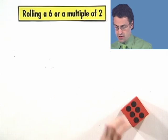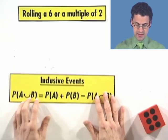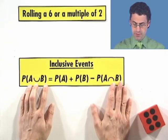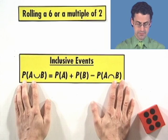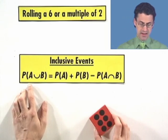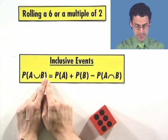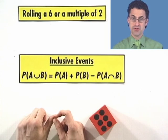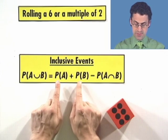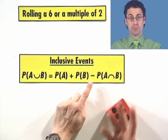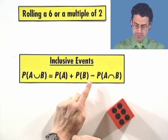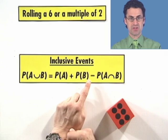These are called inclusive events. And the way we find the probability is to say that the probability of something or something else happened when they're not mutually exclusive. We take the probability of each and add them together, and then we have to subtract off the part they had in common, which is the probability that both happen at the same time.